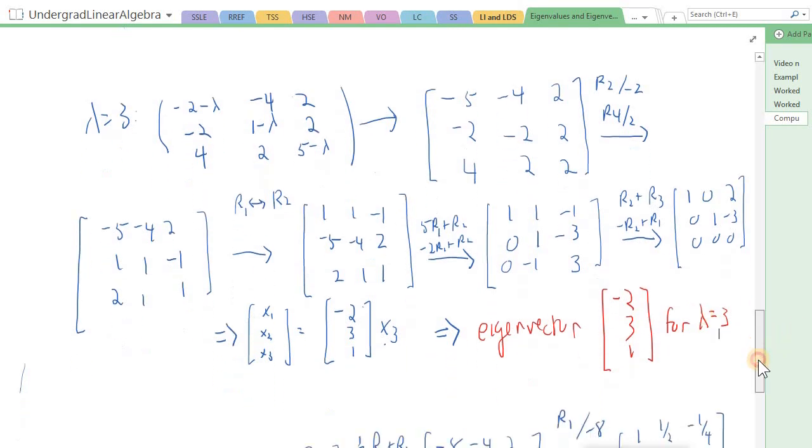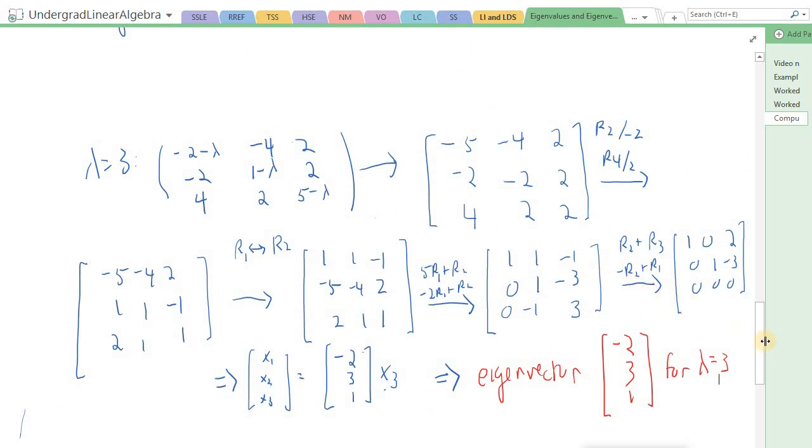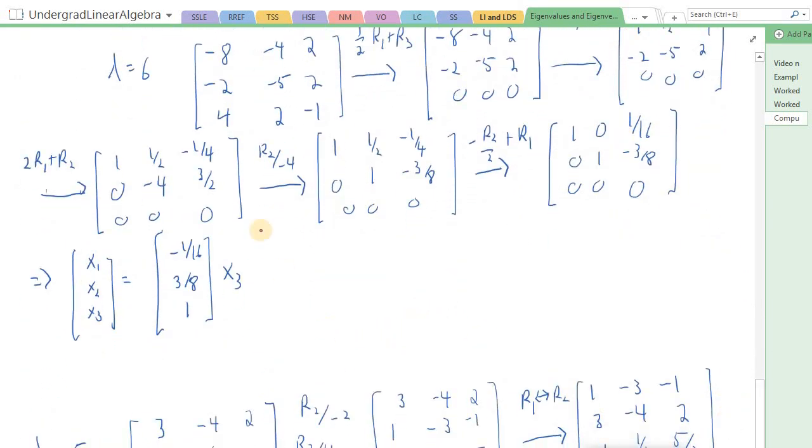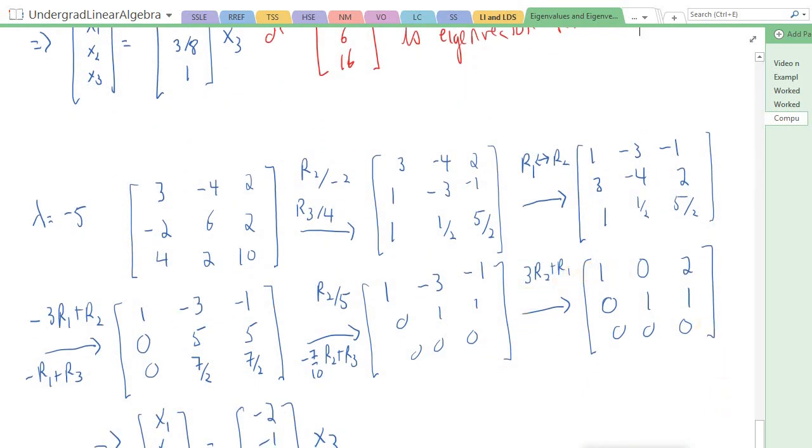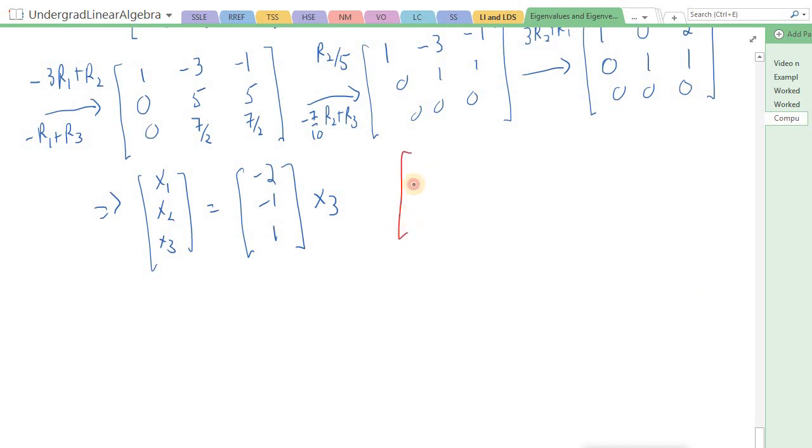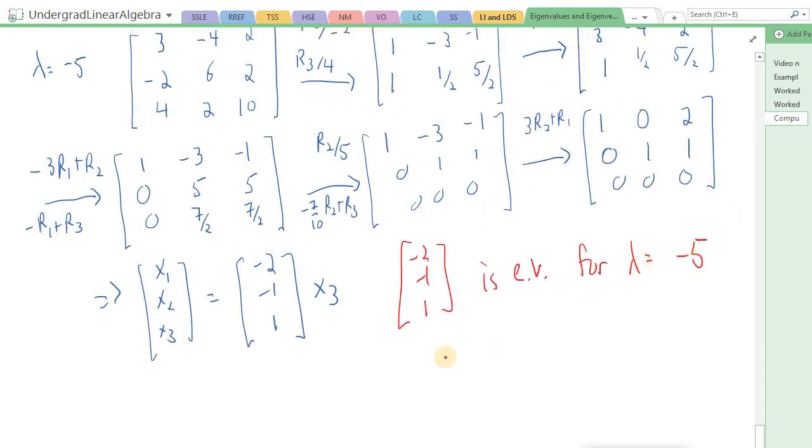Then you can look at the notes on OneNote. I do the same thing for the other two eigenvalues. This one gives me, this is for lambda equals 6. I did the row reduction. I get the null space. Here I get that. And I could also do this. I can multiply this whole vector by 16. So I could write this, or minus 1, and then 16 times 3 eighths would be 6. And then here I'd have 16. And I did the same thing for lambda equals minus 5. And I get this one down here. So here I have minus 2, minus 1, 1 is an eigenvector for lambda equals minus 5.